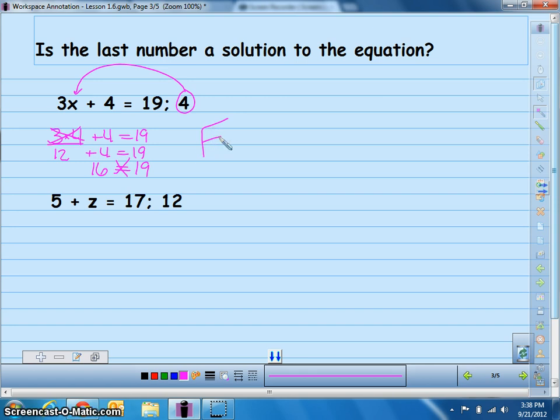How about the next one? If z equaled 12, would this be true? Is 12 a solution here? We're going to go ahead and plug this in and see what we get. 5 plus 12 equals 17. 5 plus 12 is 17. 17 equals 17. Therefore, this one is, in fact, true. So that's pretty easy.